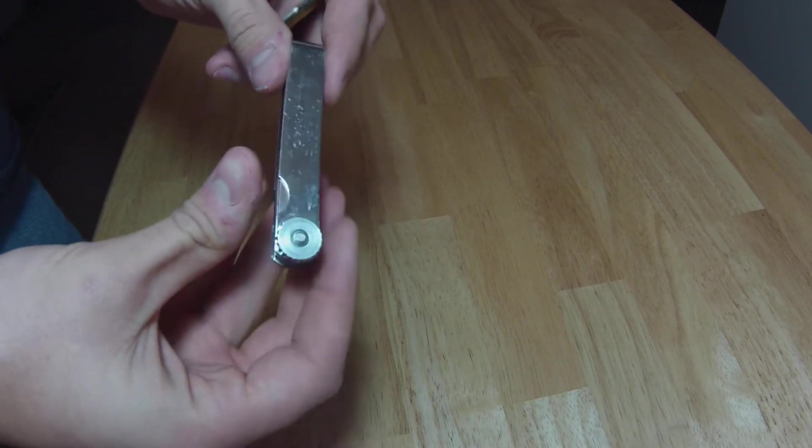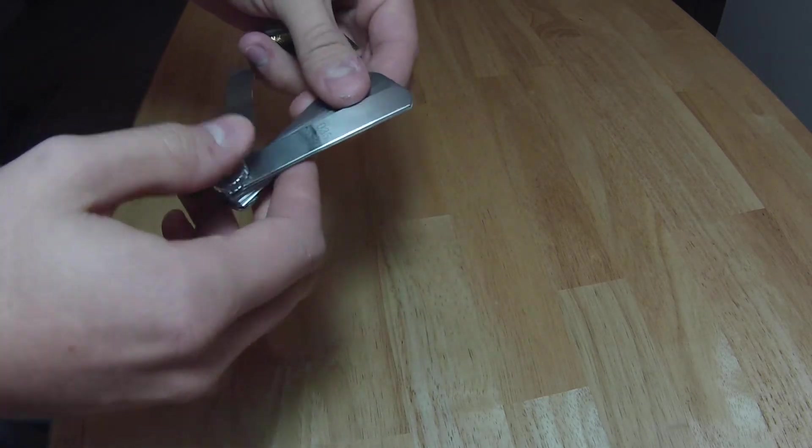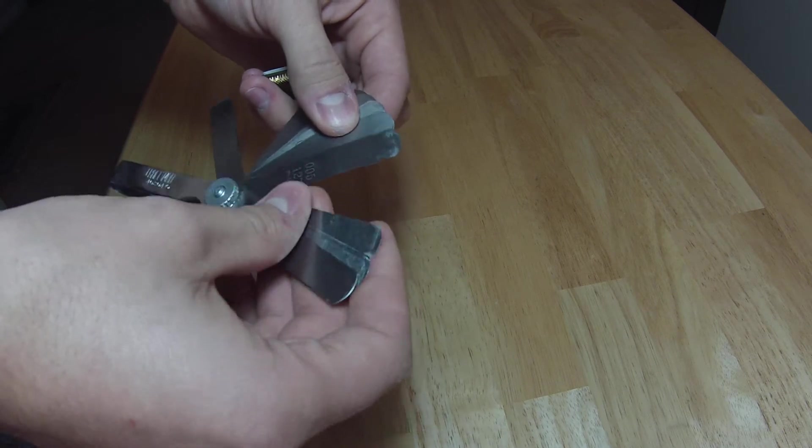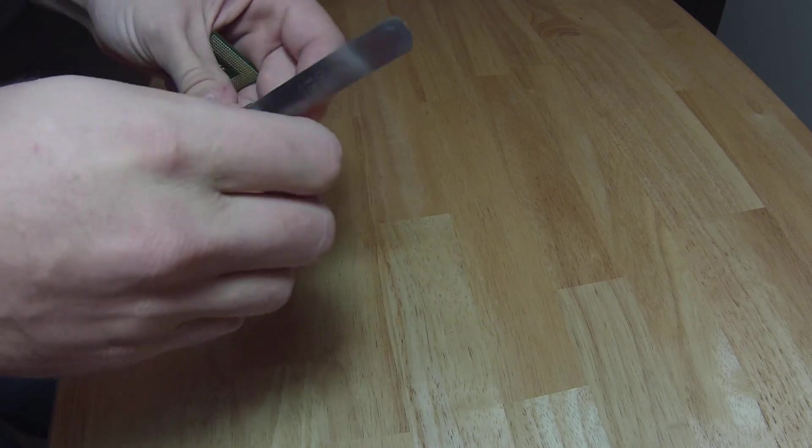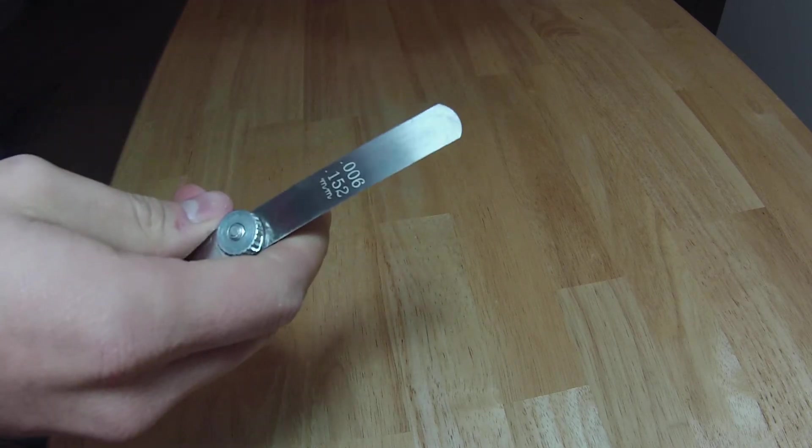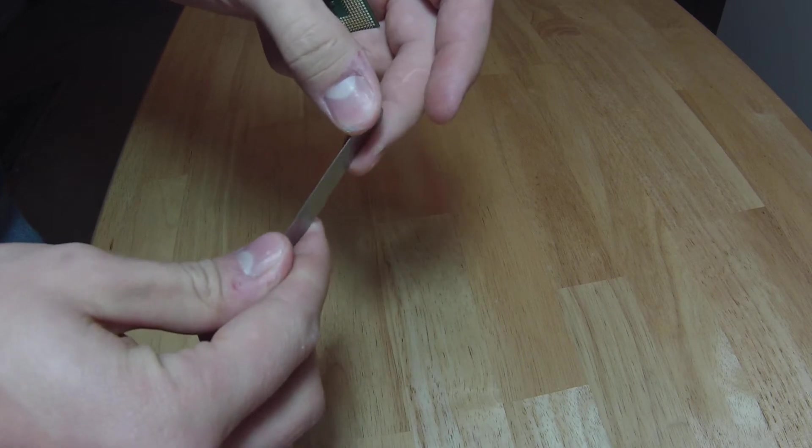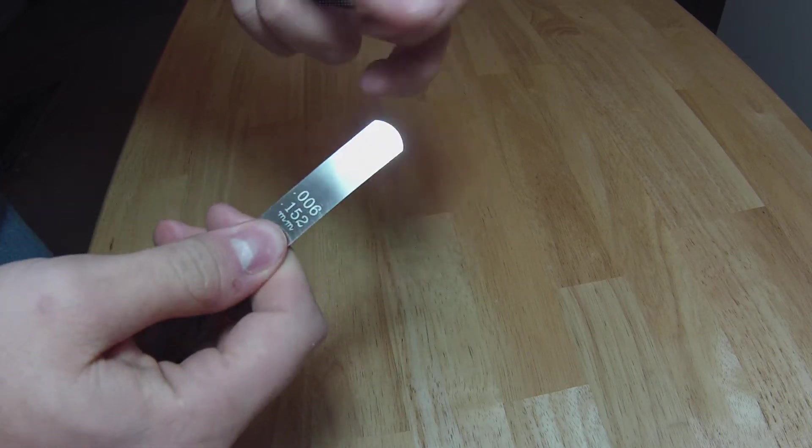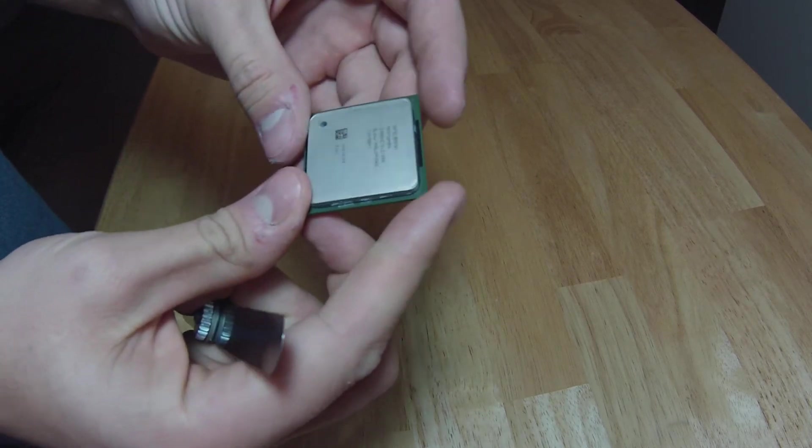What I like to use is just a feeler gauge, a standard feeler gauge, nothing fancy or special. I like to use the 0.152 millimeter feeler. The reason why is it's thin enough to cut through the epoxy and at the same time strong enough to not bend.